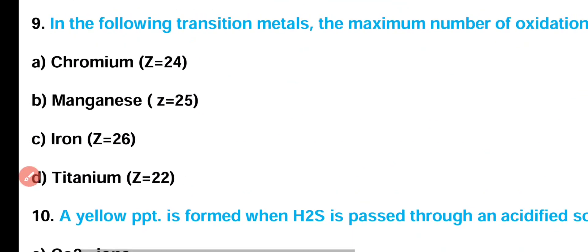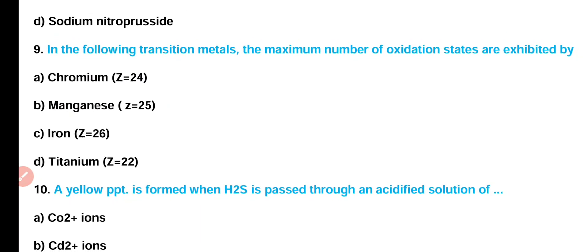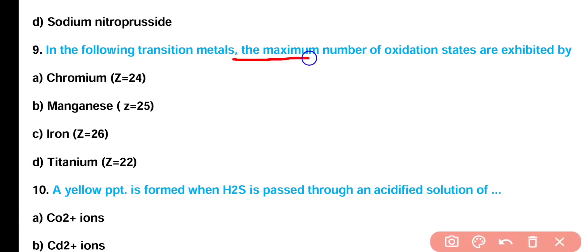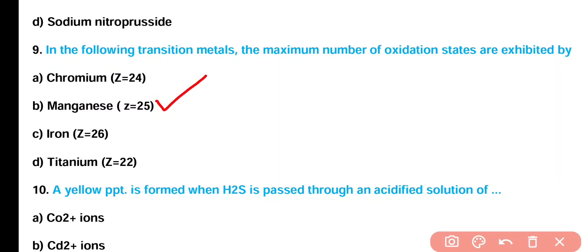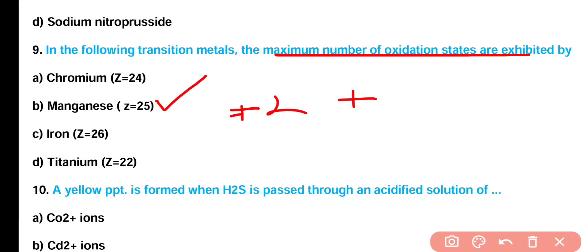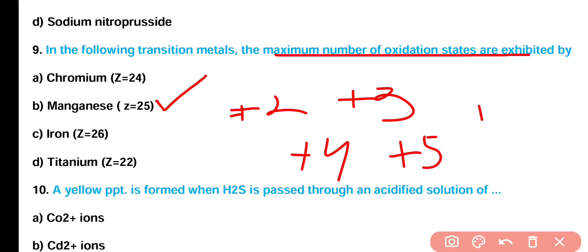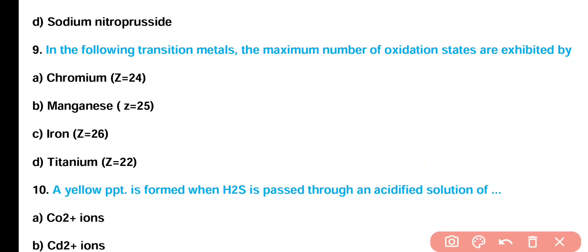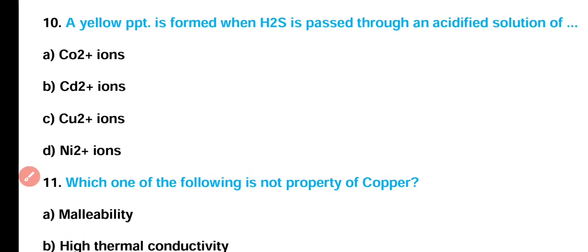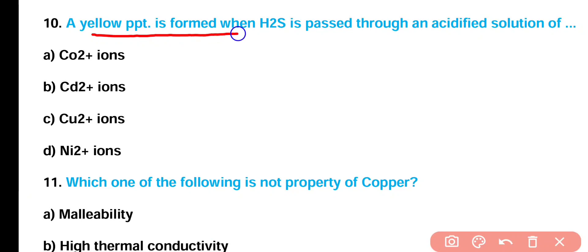Question number 9: In which of the following transition metals is the maximum number of oxidation states exhibited — chromium, manganese, iron, or titanium? Correct answer is option B. Manganese has the maximum number of oxidation states, equal to 5: +2, +3, +4, +5, and +6.